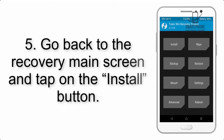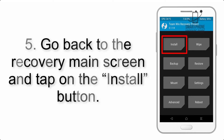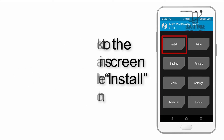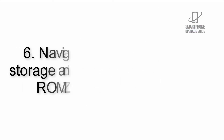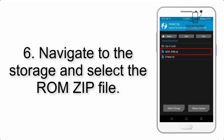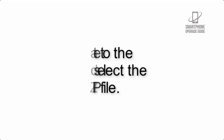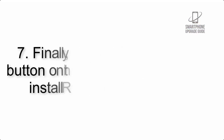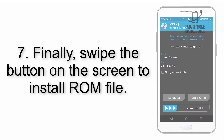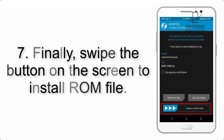Step 4: Swipe the button to wipe the device. Step 5: Go back to the recovery main screen and tap on the Install button. Step 6: Navigate to the storage and select the ROM zip file.